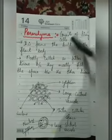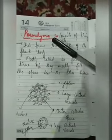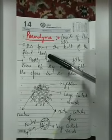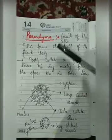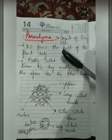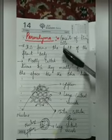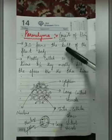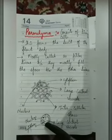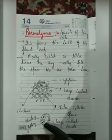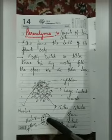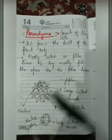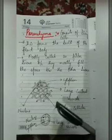Parenchyma consists of living cells, so this is a living tissue. It forms the bulk of the plant body. You can find this type of tissue in the stem, in the roots, in the leaves, and even in the fruits. Since these are living cells, they contain cytoplasm, nucleus, and a large central vacuole.